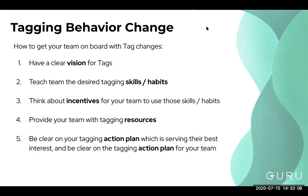Then teach the team the actual skills and habits — we can't expect them to do anything if they don't have the skills. Think about incentives for the team to use tags. Provide your team with resources, like that Guru public card Maria mentioned. Finally, have an action plan that explains how this serves their best interest — improving search functionality and making their lives easier.